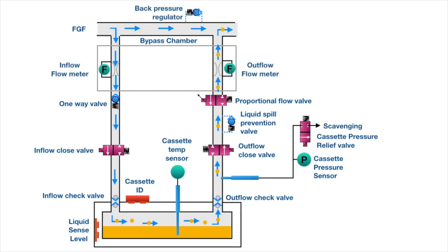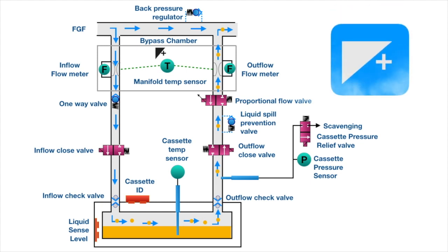Temperature compensation is achieved by the central processing unit, the CPU. The microprocessor receives input from multiple sources every 200 milliseconds, including fresh gas flow rate, carrier gas composition, set vapor concentration, liquid level, and temperature in the vaporizing chamber or sump. It controls vapor output electronically. The symbol for enhanced temperature sensing is seen on the front of the cassette in Aladdin 2 vaporizers.